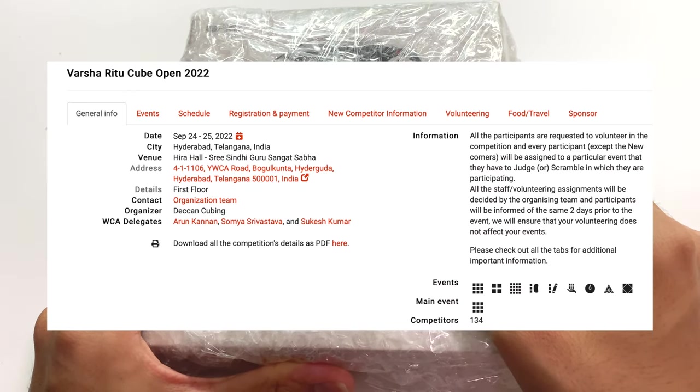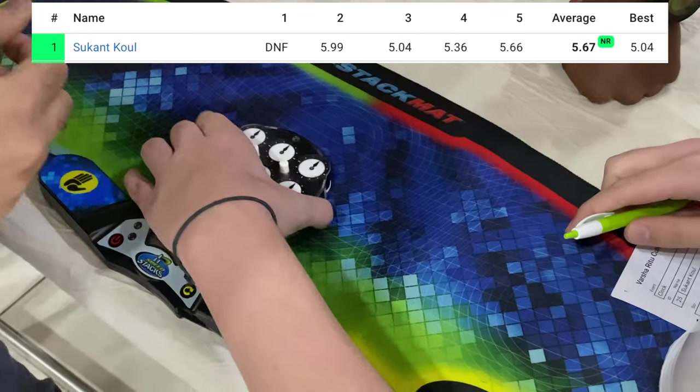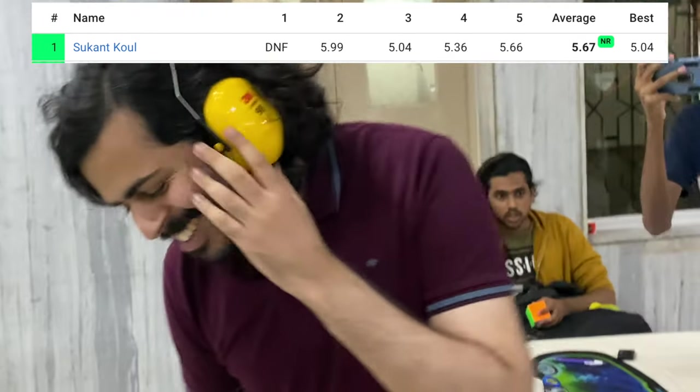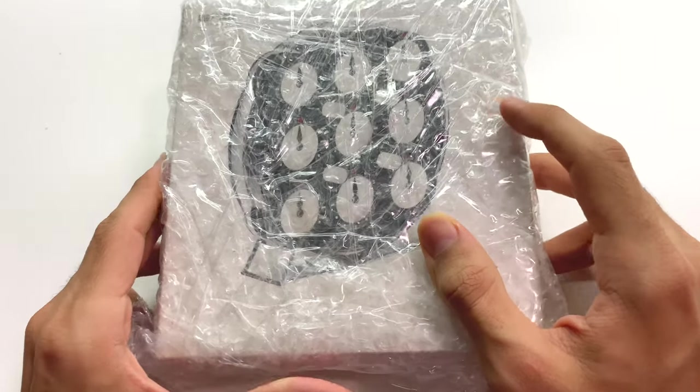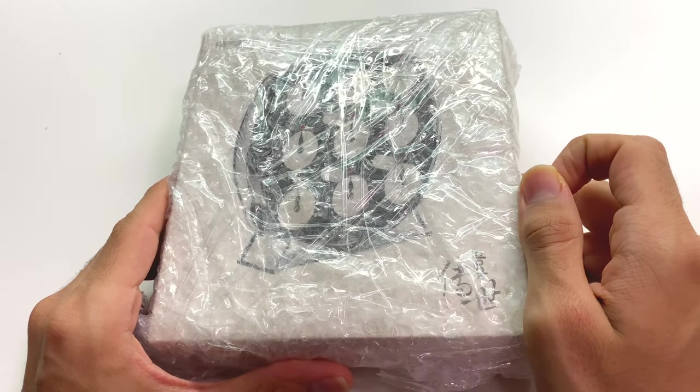Now if you guys don't know, at Varsha Ritu Cube Open, Sukkant broke the Indian national record for clock with an average of 5.67 seconds. At the competition I got to try out his Chi-E clock and it was the best Chi-E clock I've ever felt.